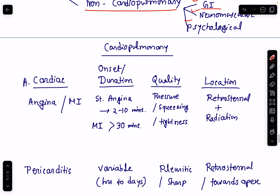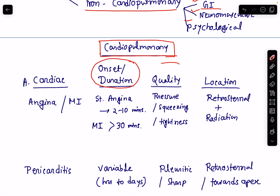Let's discuss one by one. First, cardiopulmonary causes of chest pain. I will discuss mainly about the onset or duration of the chest pain, the quality or character of the chest pain, and the location of the pain, and I will also mention some associated factors of the chest pain.